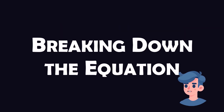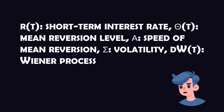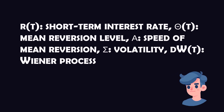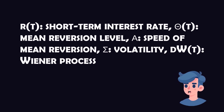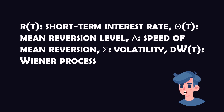In the equation, R(T) represents the short-term interest rate at time T. Theta(T) is the mean reversion level. Alpha is the speed of mean reversion. Sigma represents the volatility. And dW(T) is a Wiener process.